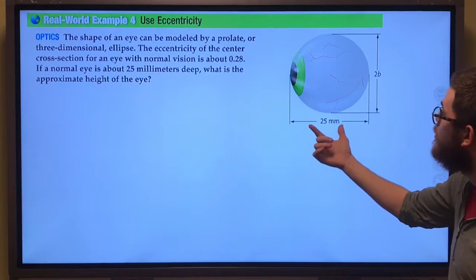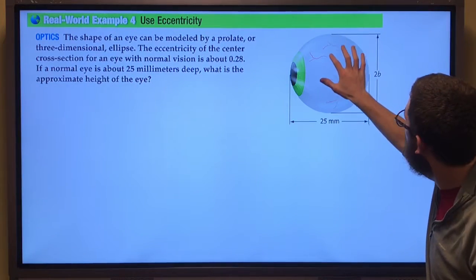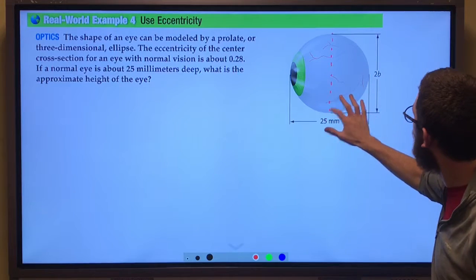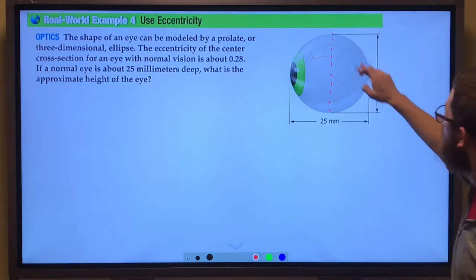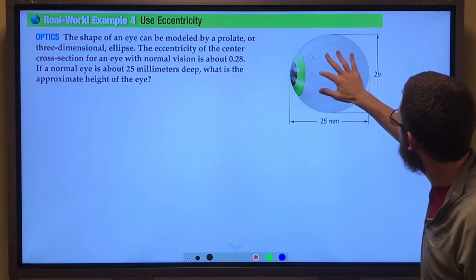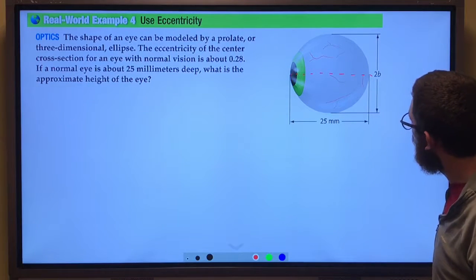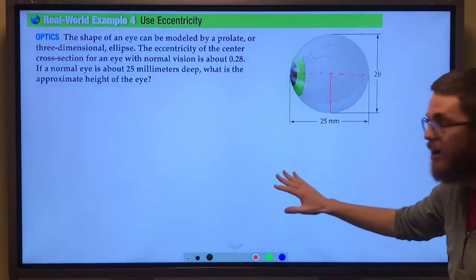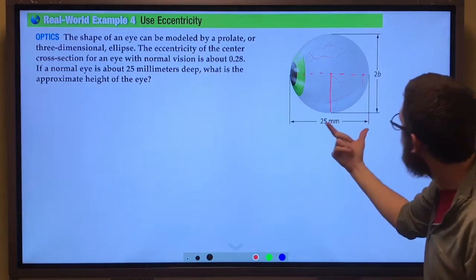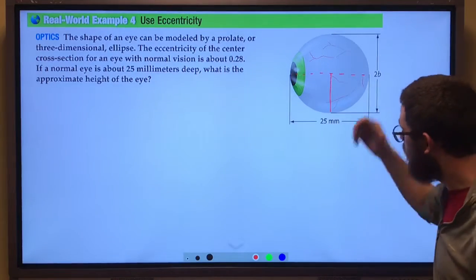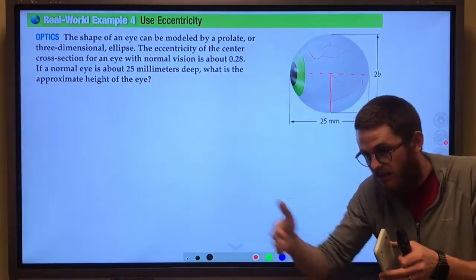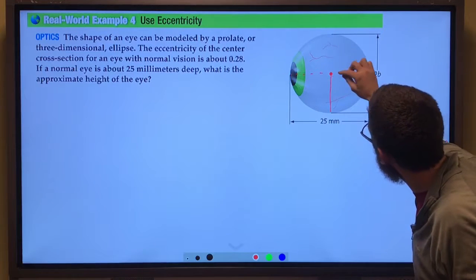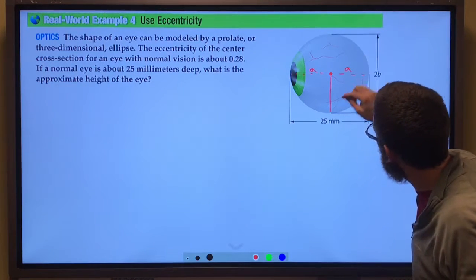Well, 25 millimeters deep, think about this right here. We're told this is 2b. That's where it really should be. So halfway across our eyeball would have to be a, the a value. If all the way across is 25, because remember the a is the distance away from the center in both directions, there's the center. So it would be a over here, a over here.